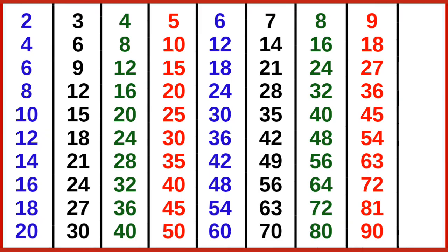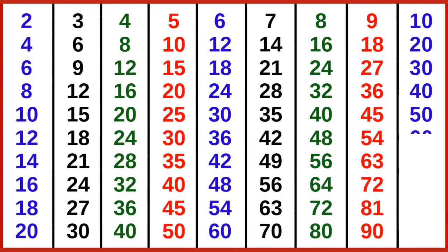10 ones are 10, 10 twos are 20, 10 threes are 30, 10 fours are 40, 10 fives are 50, 10 sixes are 60, 10 sevens are 70, 10 eights are 80, 10 nines are 90, 10 tens are 100.